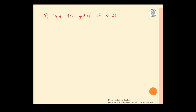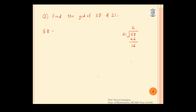We will solve this now. First of all I will divide 58 by 21. From this step I understand that 58 is equal to 21 into 2 plus the remainder, which is 16. We have written this in the form of: dividend is equal to divisor into quotient plus remainder. We will always write it in this form.